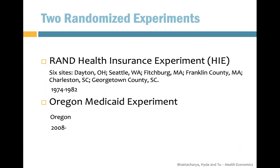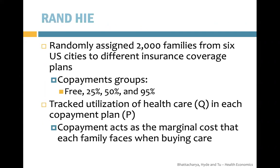In this class, we'll mostly talk about two experiments. One is the RAND Health Insurance Experiment, and the other is the Oregon Medicaid Experiment. The RAND experiment randomly assigned 2,000 families from six U.S. cities to different insurance coverage plans with different copayment groups.